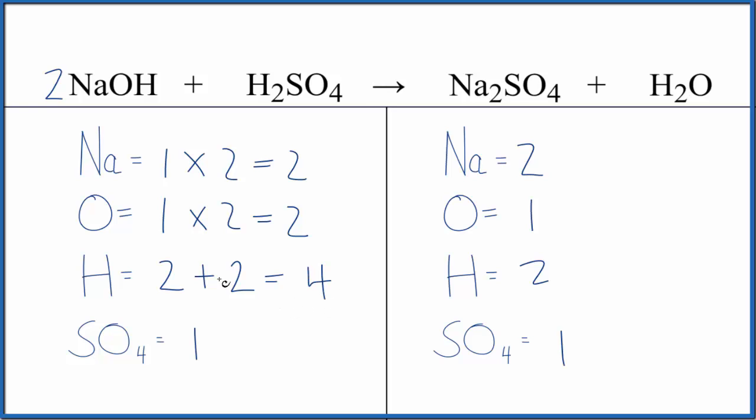At this point, it actually looks like all we need to do is put a two in front of the H2O. Because two times two, that gives us four. And then one times two, that gives us two. And we're done. This equation is balanced.